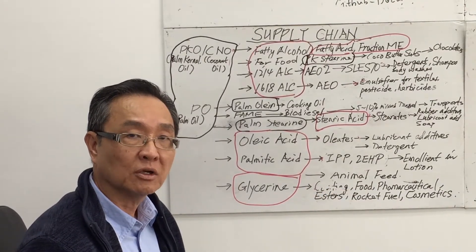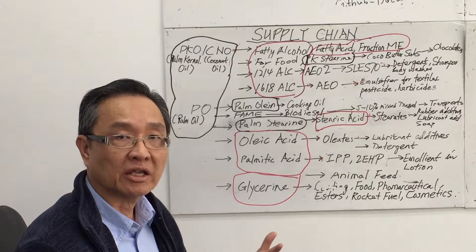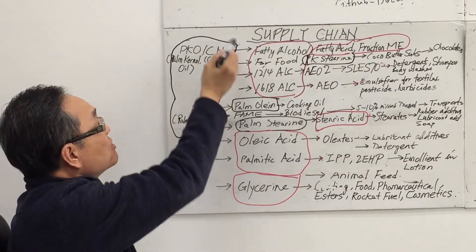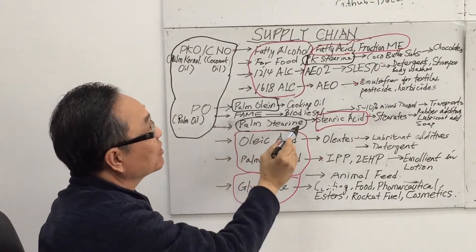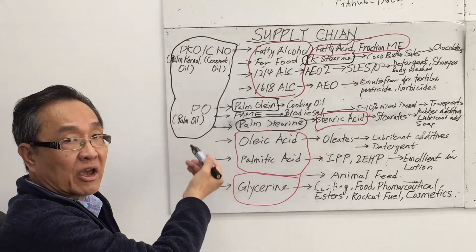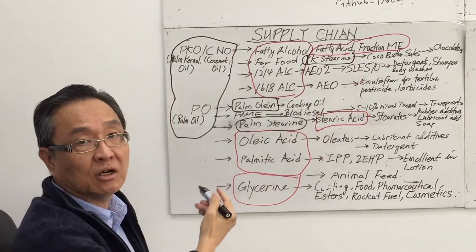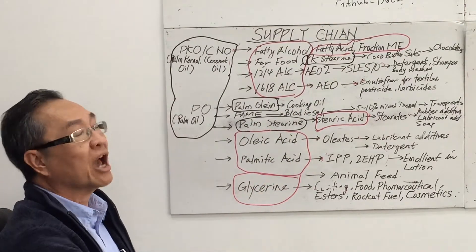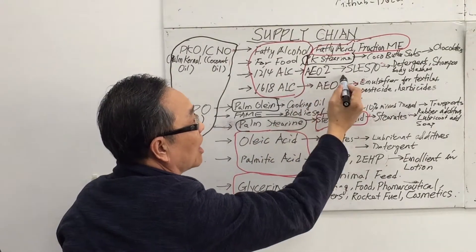After covering the supply chain, let's summarize the oleochemicals, oils and fats, and surfactants by looking back at this chart. Those circled in black — palm kernel oil, coconut oil, palm oil, palm stearine, and palm kernel stearine — are covered under oils and fats. Those circled in red — fatty alcohol, fatty acid, oleic acid, palmitic acid, and glycerine — are the oleochemicals. The rest, underlined here, are the surfactants.